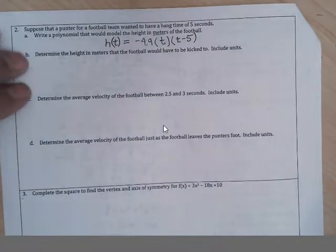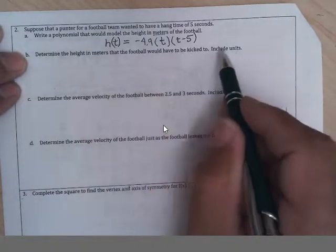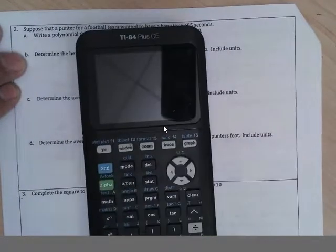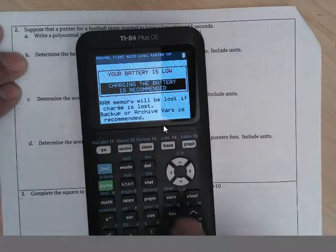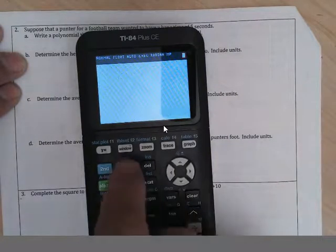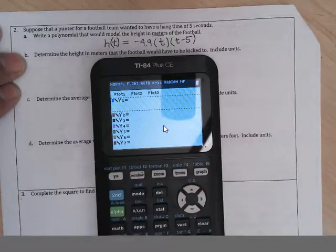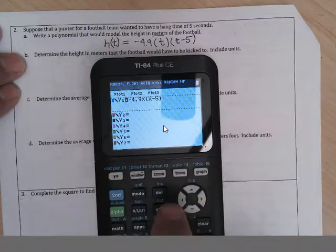So determine the height in meters that the football would have to be kicked. And so we can graph this. So clear that one and we're going to graph this. Notice it's negative 4.9 times X or times X minus five.